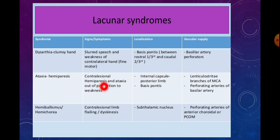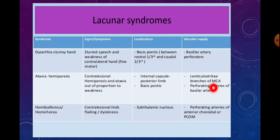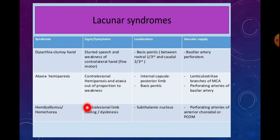Ataxic hemiparesis involves contralateral hemiparesis and ataxia — that's why it's called ataxic hemiparesis. The localization is the posterior limb of the internal capsule and basis pontis. The vascular supply is lenticulostriate branches of the MCA and perforating branches of the basilar artery.